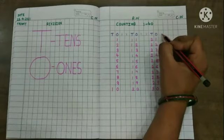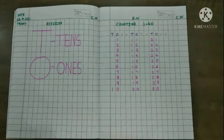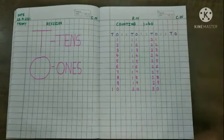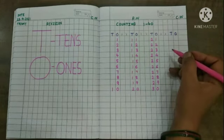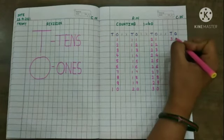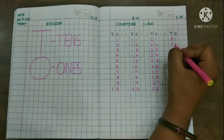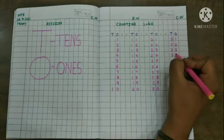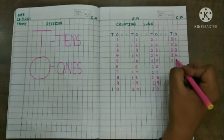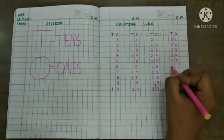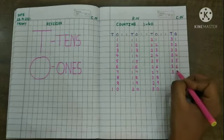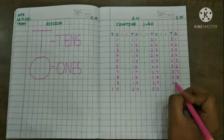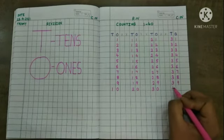Now come to the next block. T stands for tens and O stands for ones. You start writing counting: 3, 1, 31. 3, 2, 32. 3, 3, 33. 3, 4, 34. 3, 5, 35. 3, 6, 36. 3, 7, 37. 3, 8, 38. 3, 9, 39. 4, 0, 40.